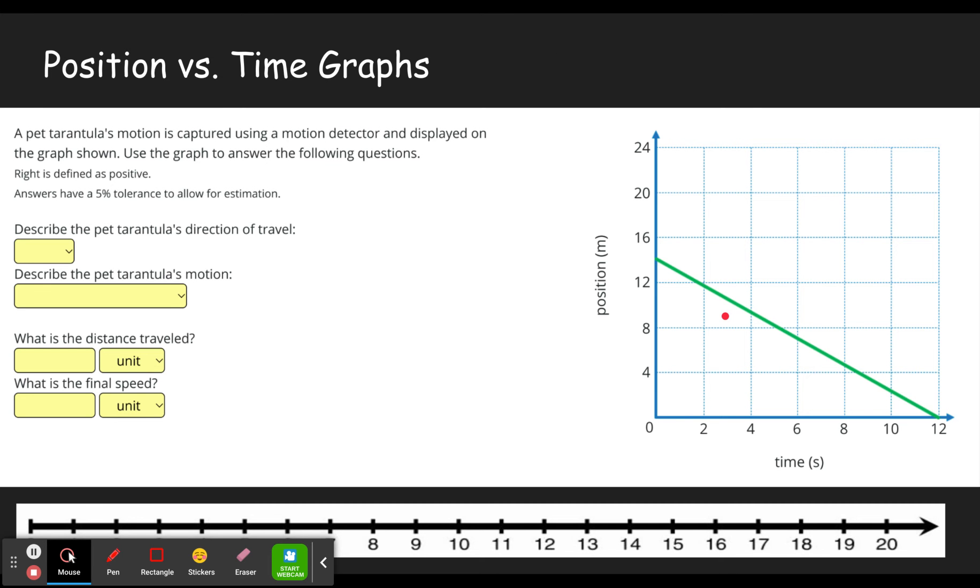So the first kind of problem is a position time graph. You'll know it's position time because it has position on the y-axis. You'll find both types of graphs have time on the x-axis. So first thing to recognize is that we're in the positive values. I like to say look up in the room you're sitting in, picture one wall having a number line on it, zero's in the middle, positive numbers are on the right, negative numbers on the left. You can see we've only got positive numbers here so everything's going to be taking place on the right side of the classroom.